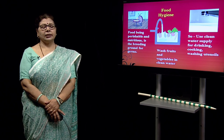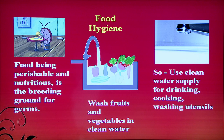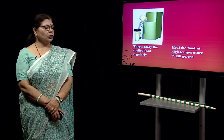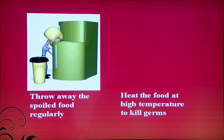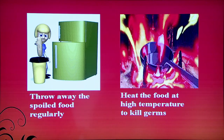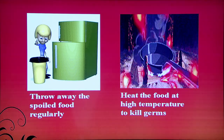Food hygiene is very important because food is perishable, nutritious, and a breeding ground for germs. You need to wash fruits and vegetables in clean water before use. Use clean water for cooking and washing. Check refrigerated items regularly and throw out spoiled food. Heat food properly before use so that at high heat, all germs and microorganisms are killed.